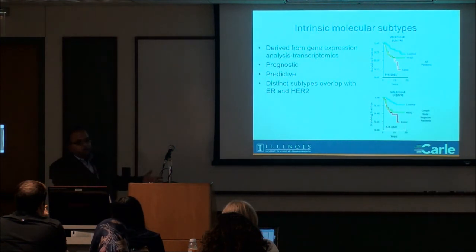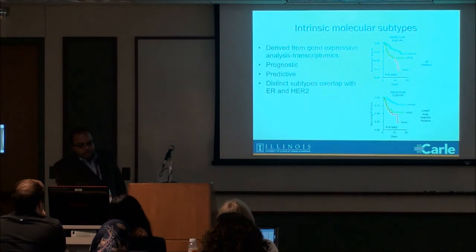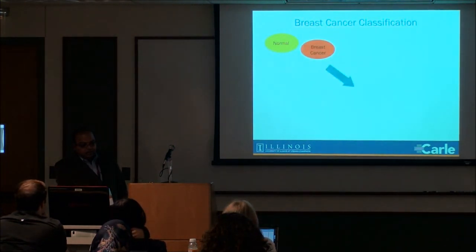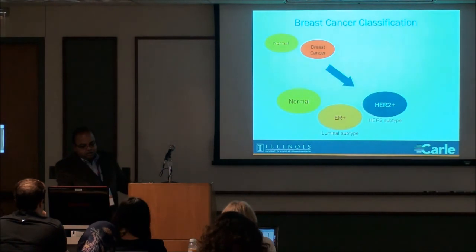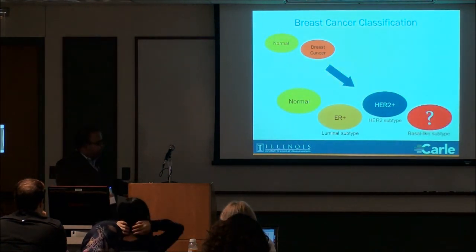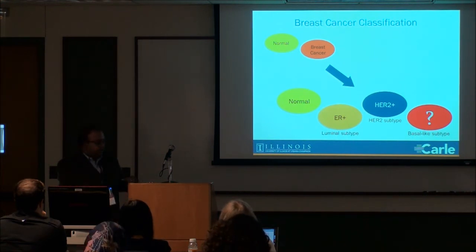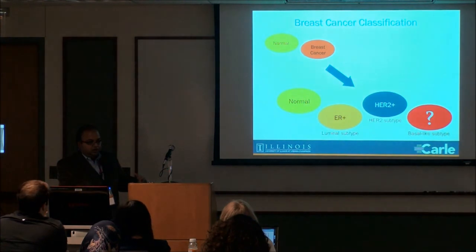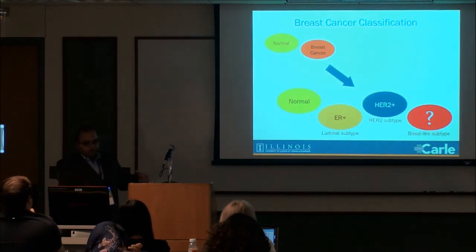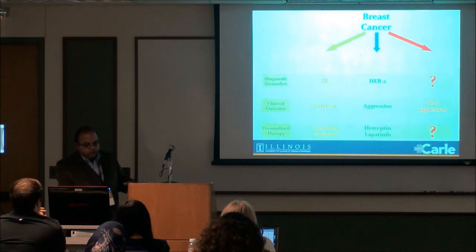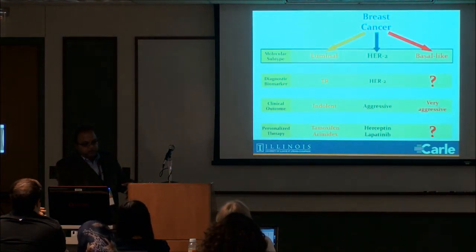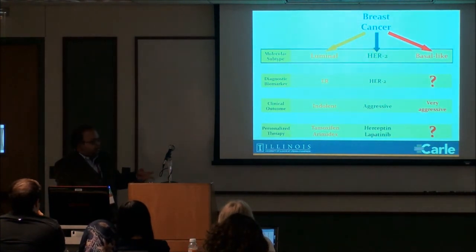Our breast cancer classification understanding changed: it was now called a molecular type — Luminal (ER-positive), HER2 subtype, and Basal-like. But we still had two question marks: what's the diagnostic biomarker for the third group, and how can we personalize therapy for that group? My lab got involved during my fellowship training specifically to find one gene marker that could tell this third group apart and hopefully down the road tailor treatment to that group better.